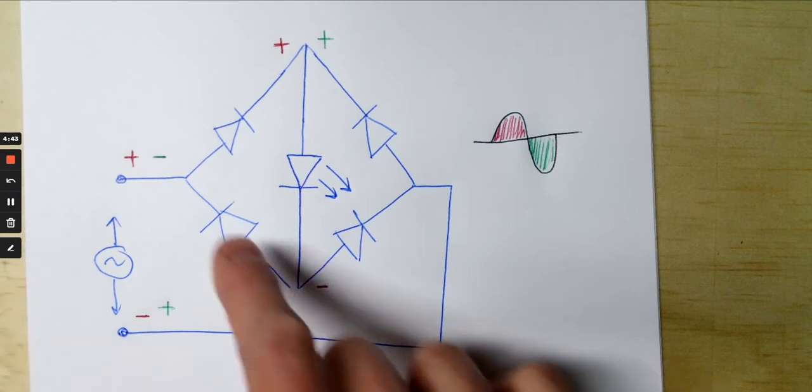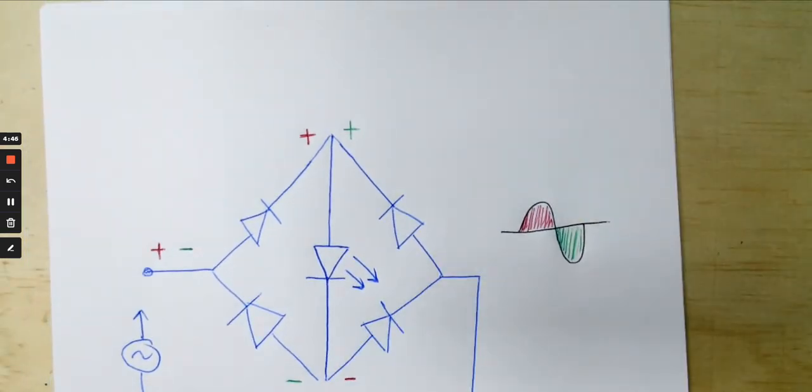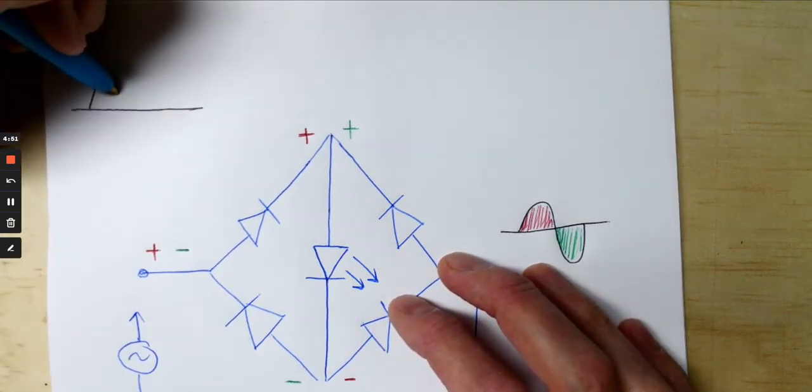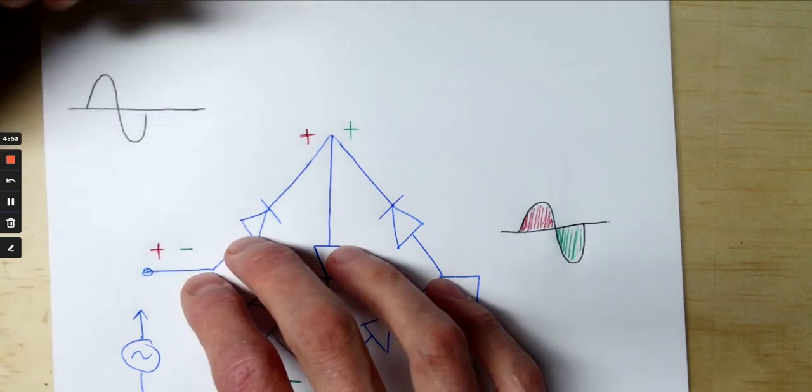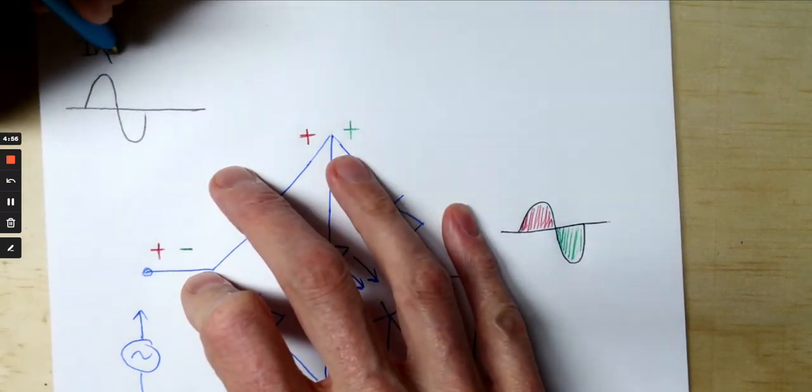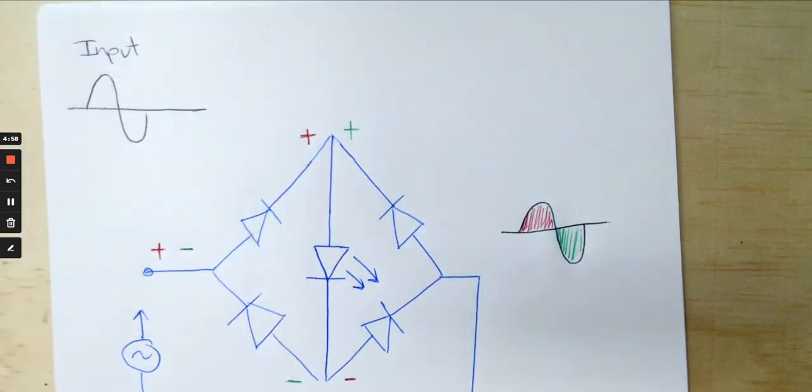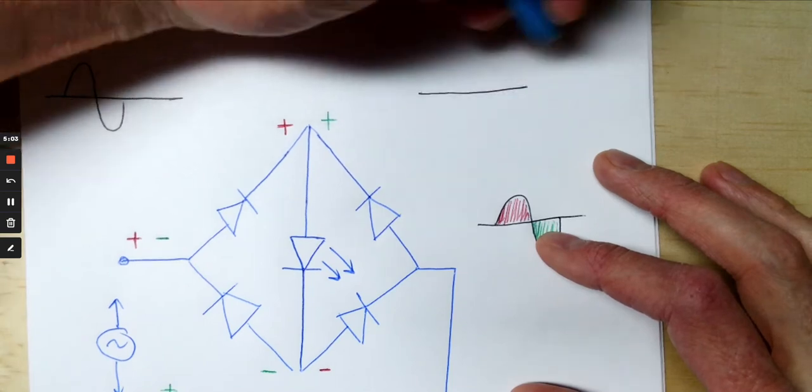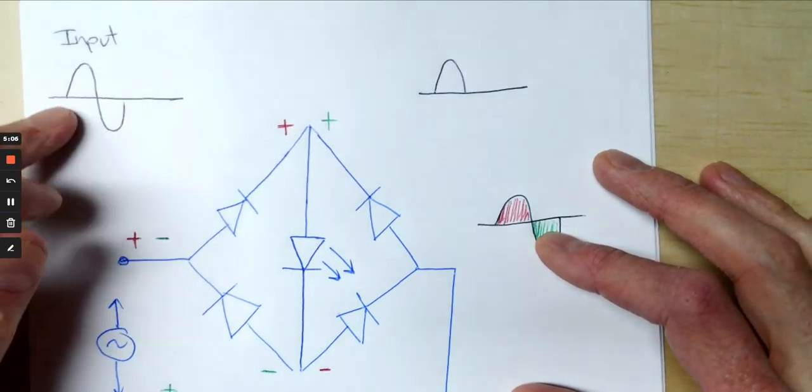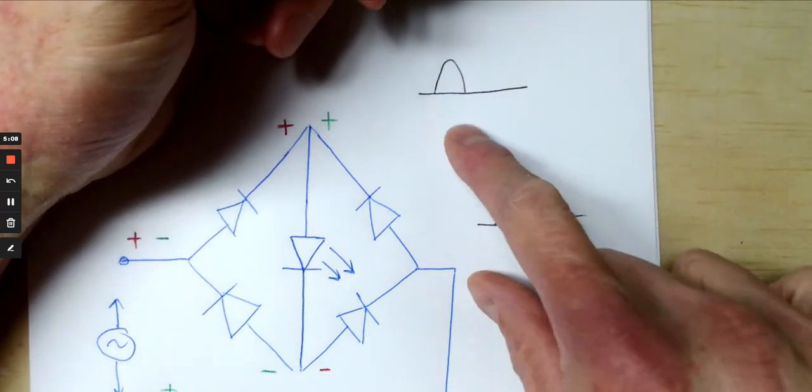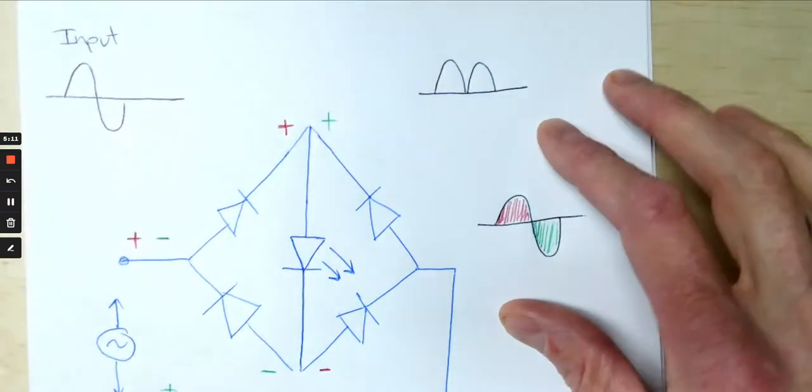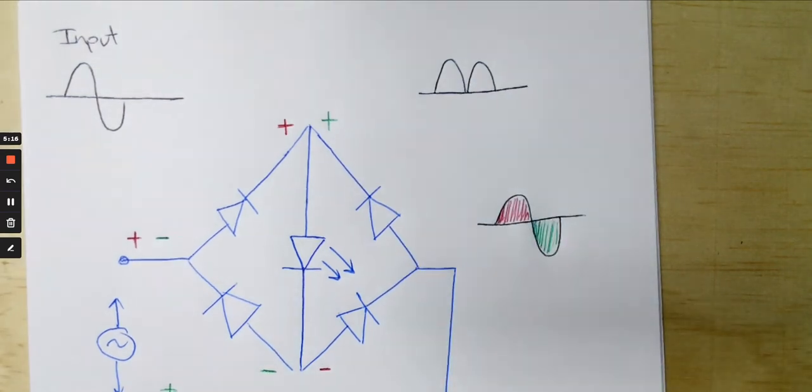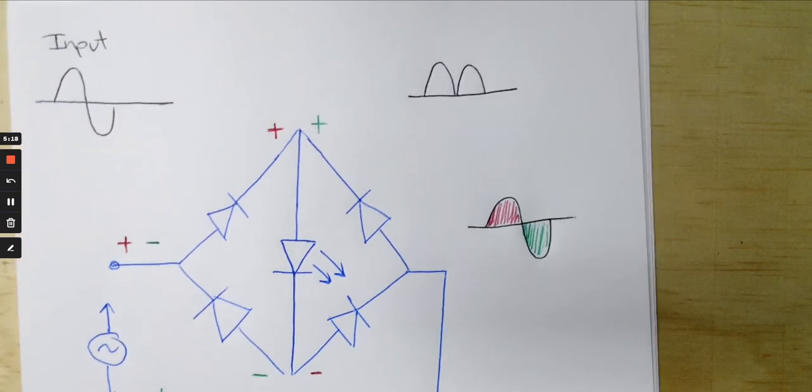So we're taking an alternating current input. Let's see what the input would look like. We have an alternating current input. And then the output is going to be a pulsating DC. So the first hump, no problem. The second hump instead of going down is going to come up again. So we have full wave rectified alternating current, now pulsating direct current. We'll call that output.